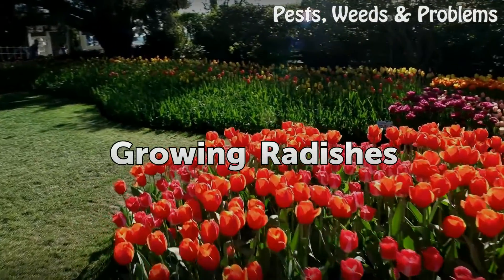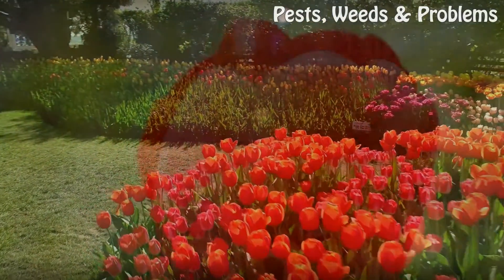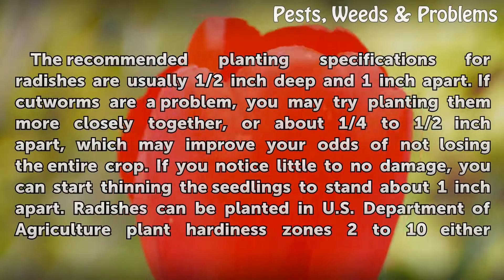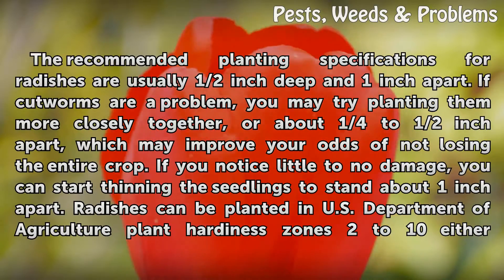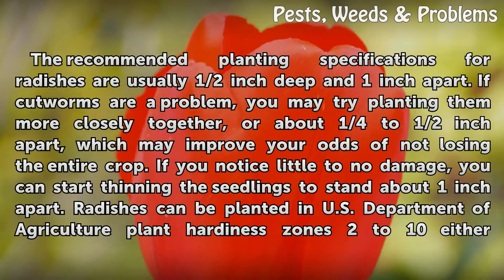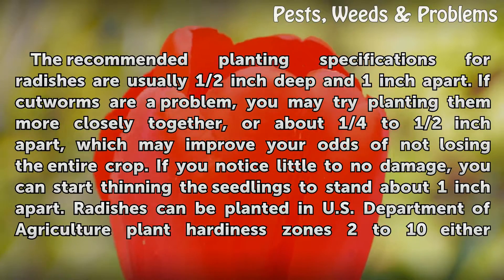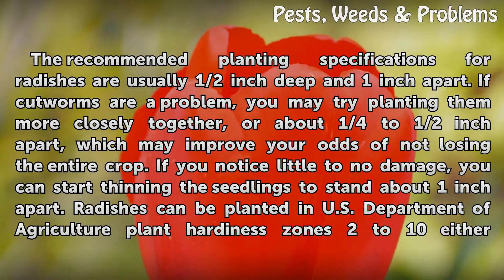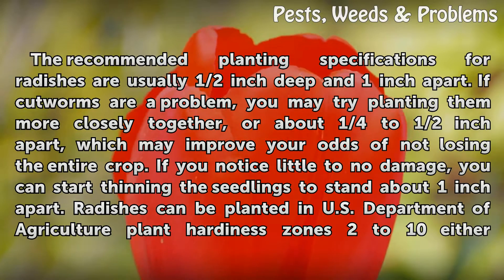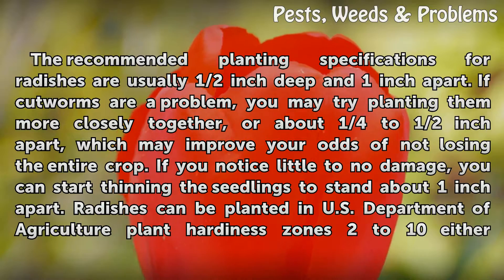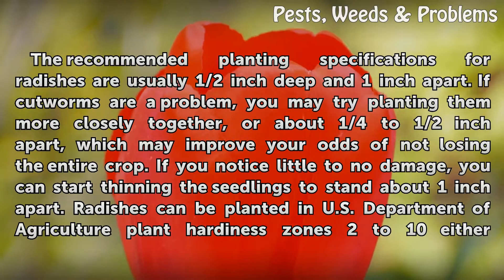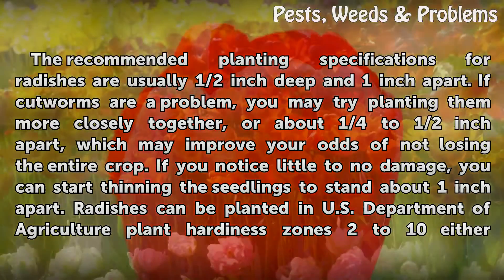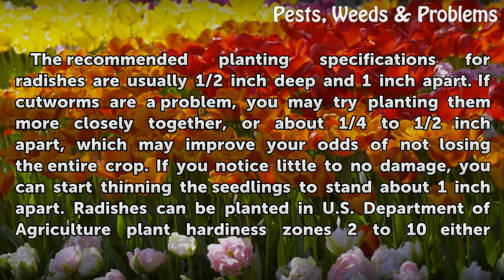Growing radishes: the recommended planting specifications for radishes are usually half an inch deep and one inch apart. If cutworms are a problem, you may try planting them more closely together — about one quarter to half inch apart — which may improve your odds of not losing the entire crop. If you notice little to no damage, you can start thinning the seedlings to stand about one inch apart.